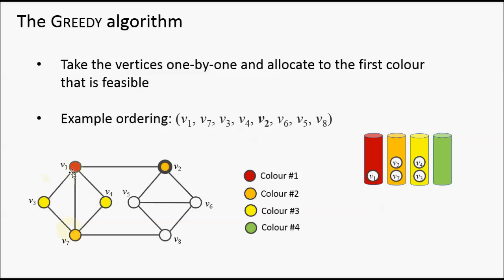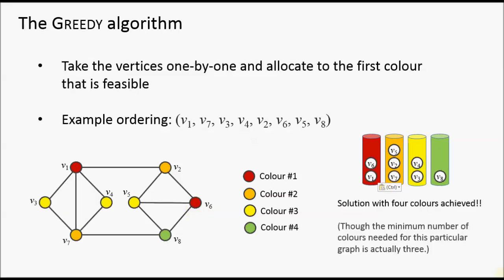The next vertex we consider is vertex 2. It's adjacent to red, but not adjacent to orange, so we can give it the colour orange. Similarly, vertex 6 is not adjacent to red, so we can assign it to the first colour. We continue stepping through until we've coloured all the vertices, producing a solution that uses four colours.